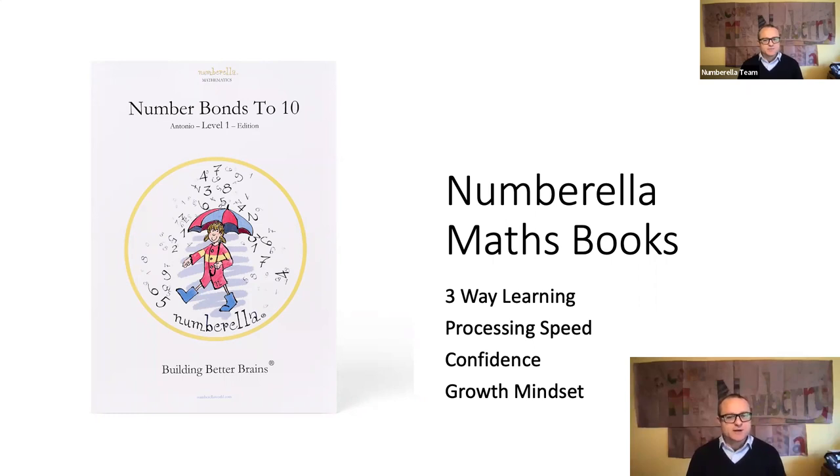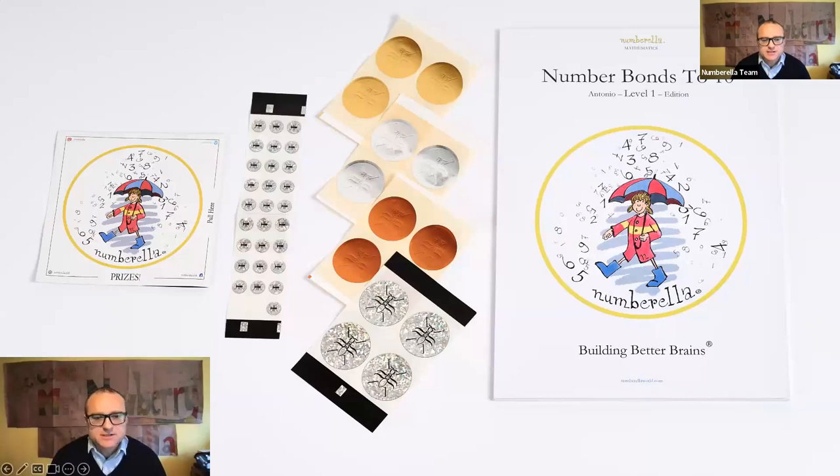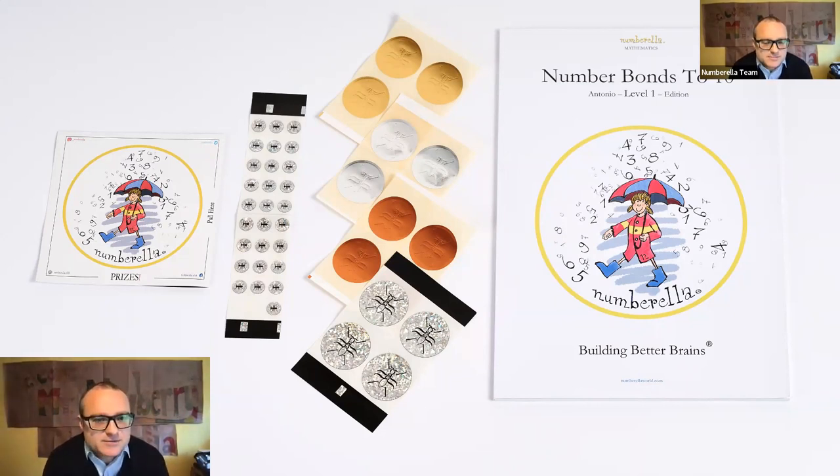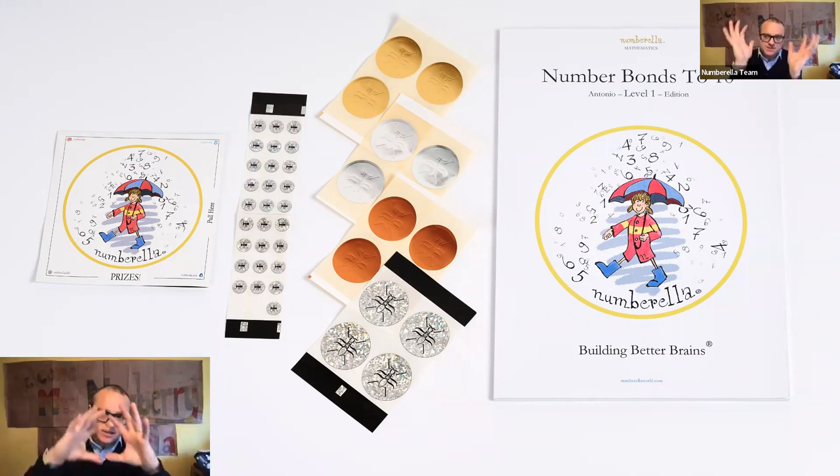What you're looking at here is the level one number one to ten book. The Numbrella books are designed to facilitate what we call three-way learning: processing speed, confidence, and growth mindset. All books come with a sticker pack. You have gold, silver, and bronze stickers, and then at the bottom you have the ant sticker, which is the highest award you can get in the book. That's the one when you are beginning to get towards the fluency mark. On the left you have the personal best and goal achieved stickers. They are there to recognize when a student has achieved a personal best or achieved their goal. This motivational architecture is really central to the way that these books work.